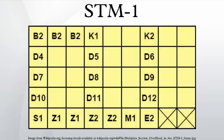J0: path trace. It is used to give a path through an SDH network a name. This message enables the receiver to check the continuity of its connection with the desired transmitter.